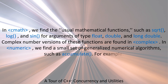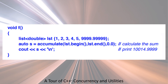For example: void f — list<double> lst = {1, 2, 3, 4, 5, 9999.99999}. auto s = accumulate(lst.begin(), lst.end(), 0.0); // calculate the sum. cout << s << '\n'; // prints 10014.9999.